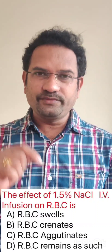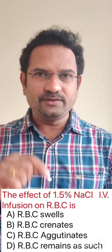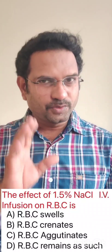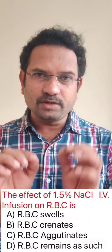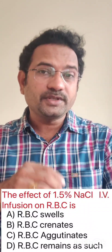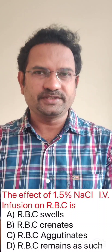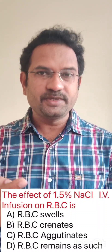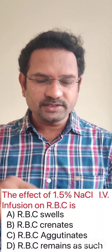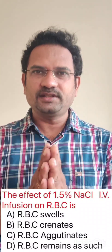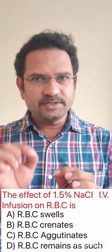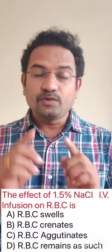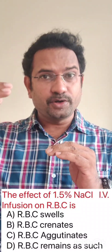The next question: what is the effect of 1.5% sodium chloride IV infusion on RBC? Options are: RBC swells, RBC crenates, RBC agglutinates, or RBC remains as such. Understand the concept: 0.9% sodium chloride is isotonic with blood plasma. Giving 1.5% means giving a hypertonic solution. When a hypertonic solution is given, the osmotic gradient inside the red blood cell is low.